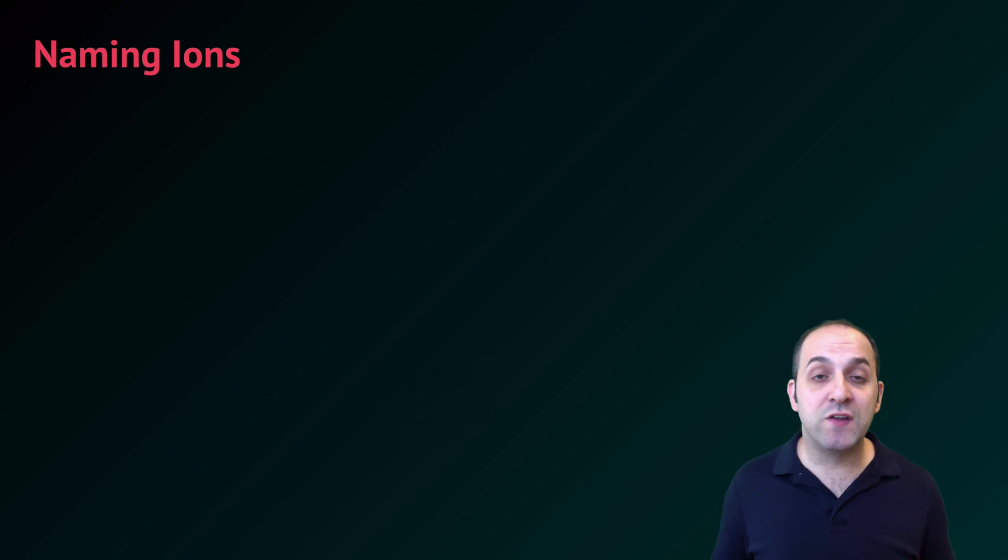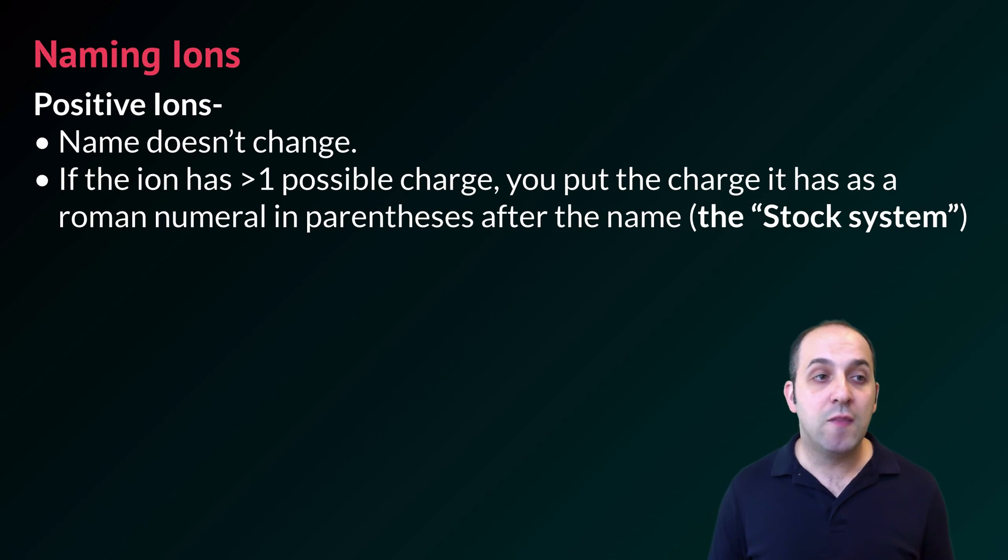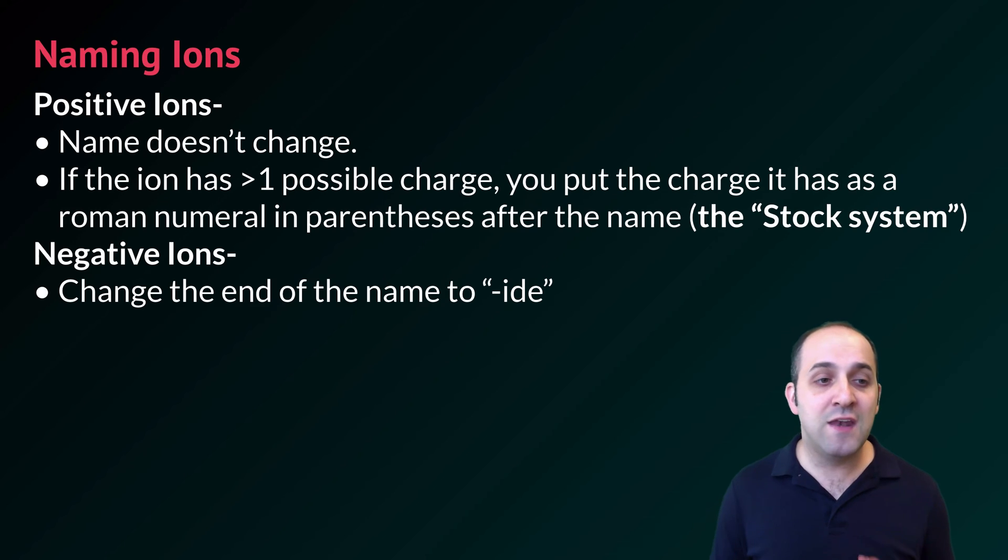We also need to be able to name ions, and we'll talk a lot more about this later on in the course when we talk about compounds, but here are the rules. The positive ion's name does not change. If the positive ion has more than one possible charge, we have to put the charge that it actually has as a Roman numeral in parentheses after its name. This is called the stock system, and we will talk a lot more about this later on in the course. The negative ion's name is going to change. We're going to change the end of its name to IDE.